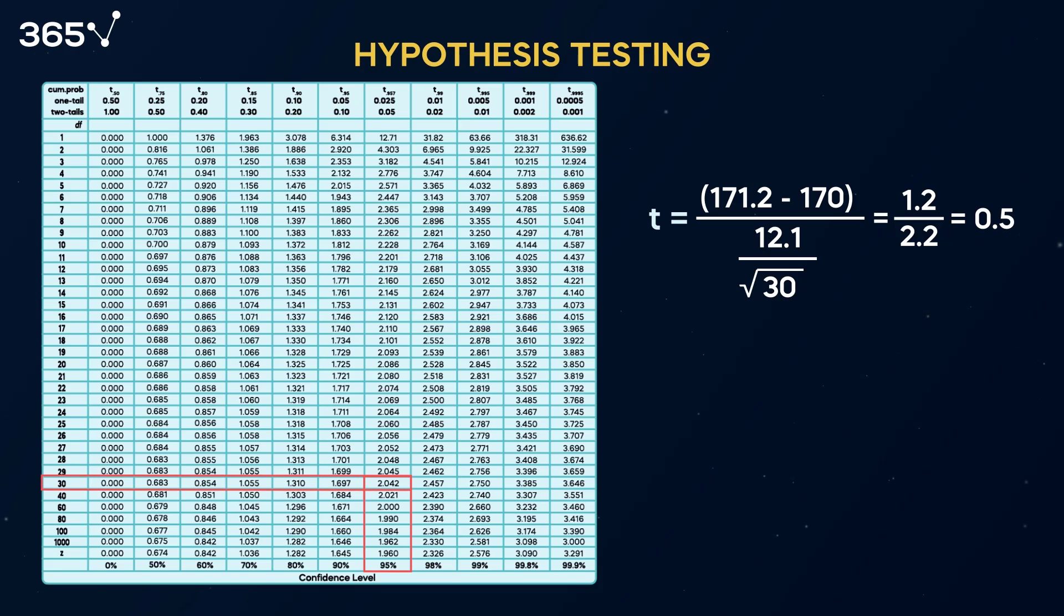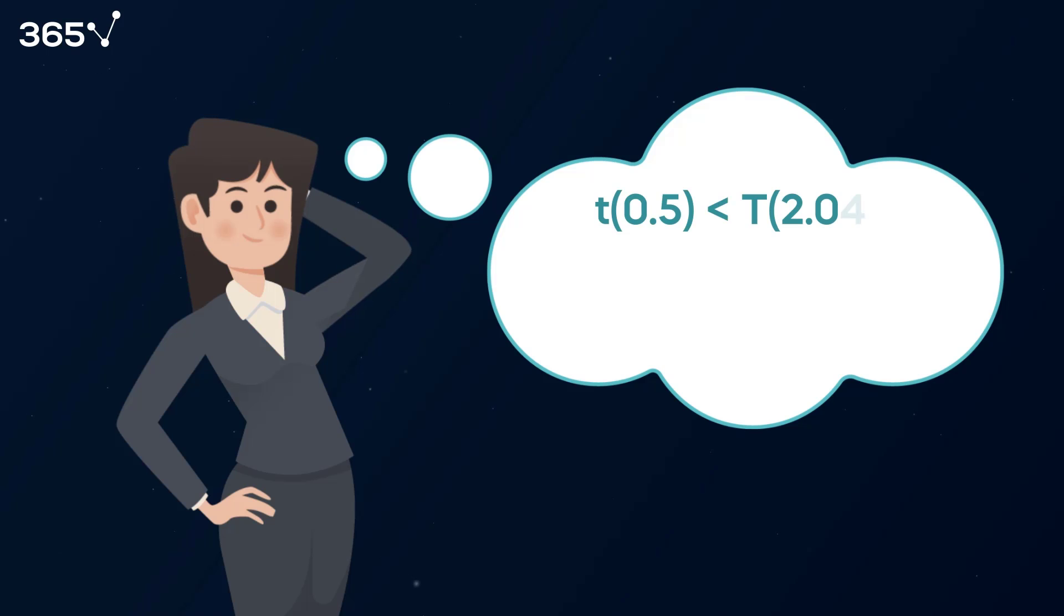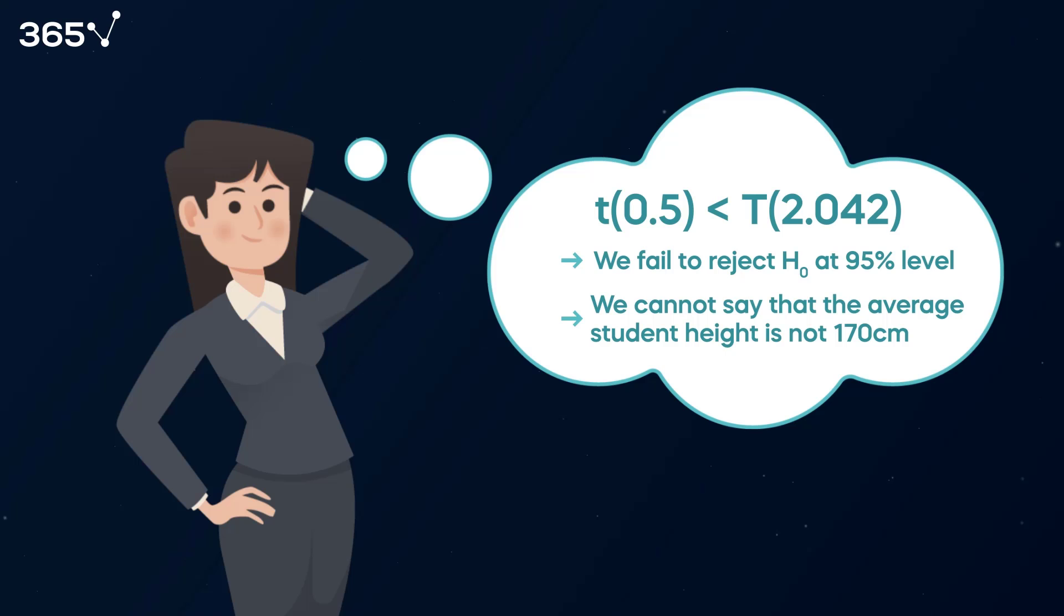Using a t-table, the critical t-value for a two-tailed test with 30 degrees of freedom and a 95% confidence level is 2.042. Since the absolute value of our t-statistic, 0.5, is less than the critical t-value, 2.042, we can conclude that our result is not statistically significant at the 95% confidence level. In other words, we failed to reject the null hypothesis that the average student height is not 170 centimeters.